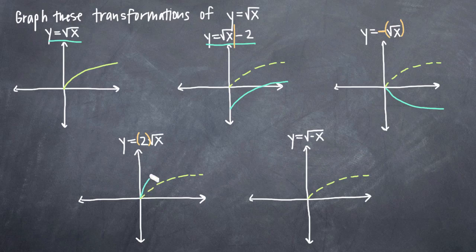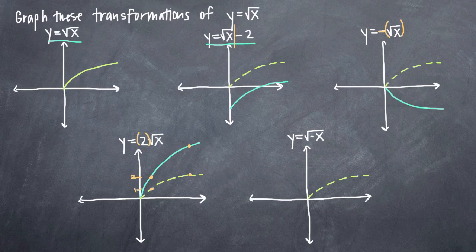So that'll look something roughly like this. We would have had our original y coordinate, let's say that's at 1 — well our new y coordinate will be double that, a factor of 2, so the new y coordinate will be at 2. Same thing: if our y coordinate was 3, our new y coordinate is 6. So it just stretches the graph by a factor of 2. If we had had y equals negative 2 times the square root of x, we would have been stretching the graph by a factor of 2 and flipping it across the x-axis.